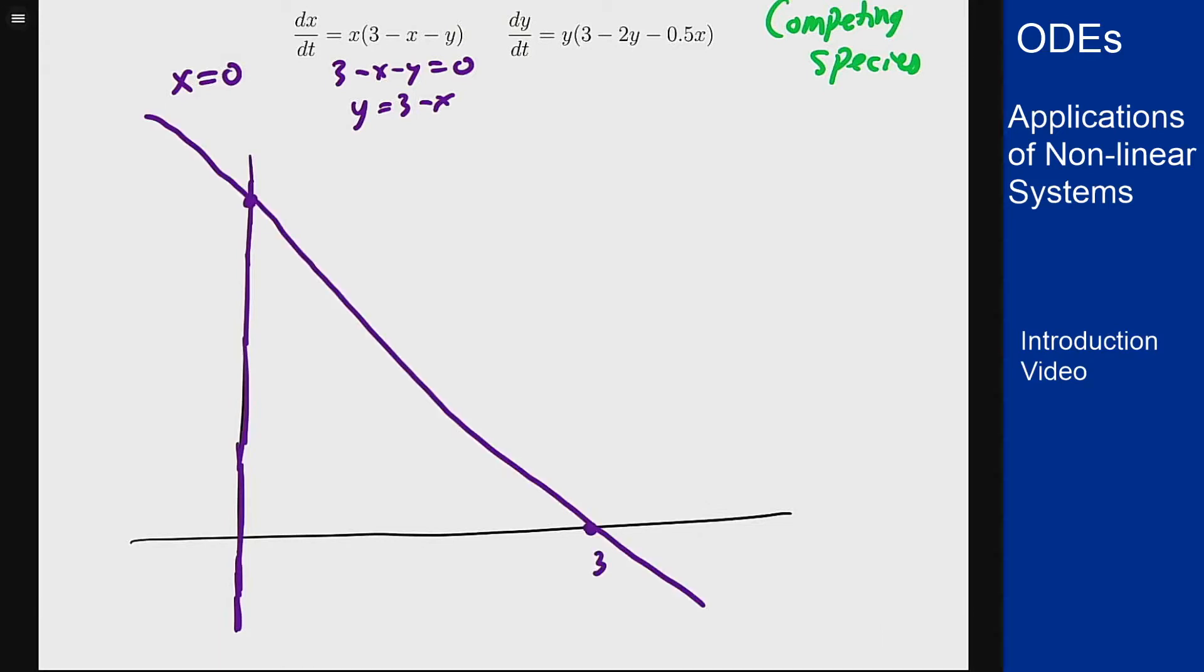For the y derivative we get y equals 0 and 3 minus 2y minus 0.5x equals 0, or rearranging, y equals 3 halves minus 1 fourth x. The y equals 0, that is the x axis. And then the other is a line that's going to hit at 3 halves up here and 6 down here.